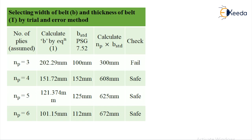We have calculated the value of B standard as 300 mm, 608 mm, 625 mm and 672 mm and we can see that when we have done a check for NP is equal to 3, the criteria fails. For NP is equal to 4, 5 and 6, it is okay.